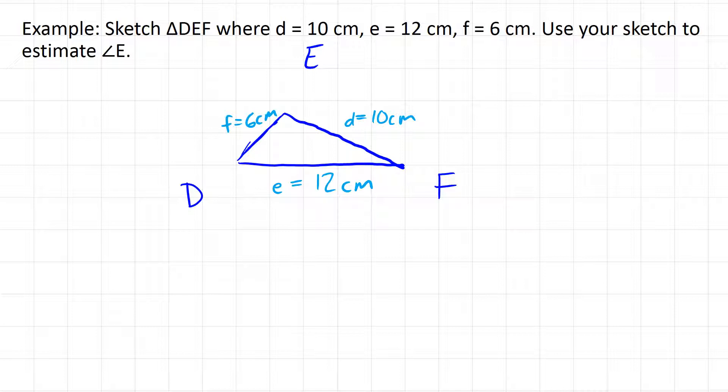And now is it perfect? No, but I think it looks pretty good. D is shorter than E, f is about half the length of E. I think this looks pretty solid.